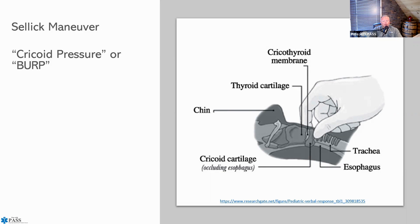An important mnemonic for troubleshooting any problem with an endotracheal tube is DOPE: Dislodged, Obstructed, Pneumothorax, or Equipment malfunction. Any time there's a problem with an intubated patient, it will fall into one of these four categories—the tube became dislodged, mucus buildup caused an obstruction, a tension pneumothorax developed, or there's equipment failure such as a lost pilot balloon or the tube migrating into the right main stem bronchus.